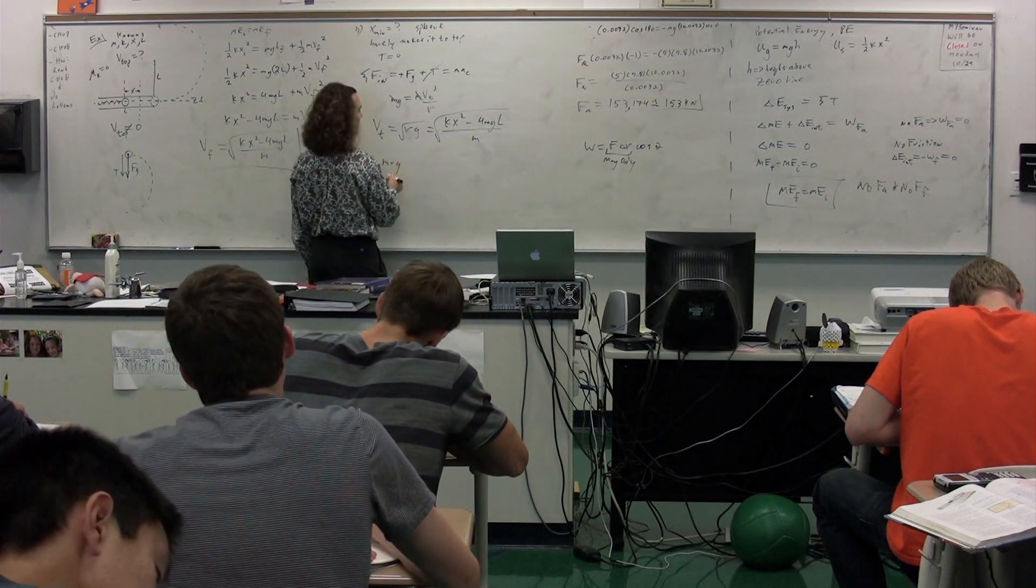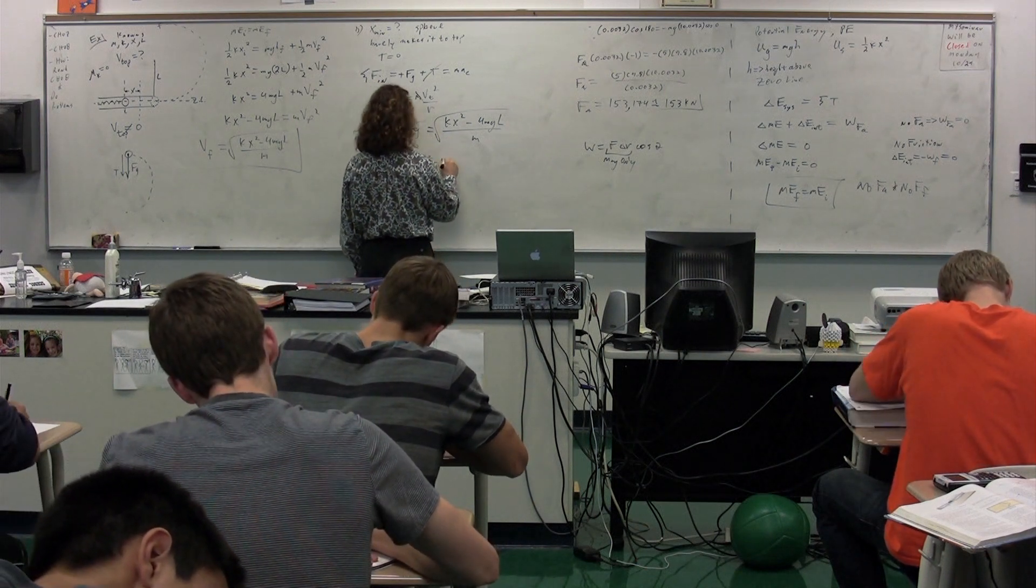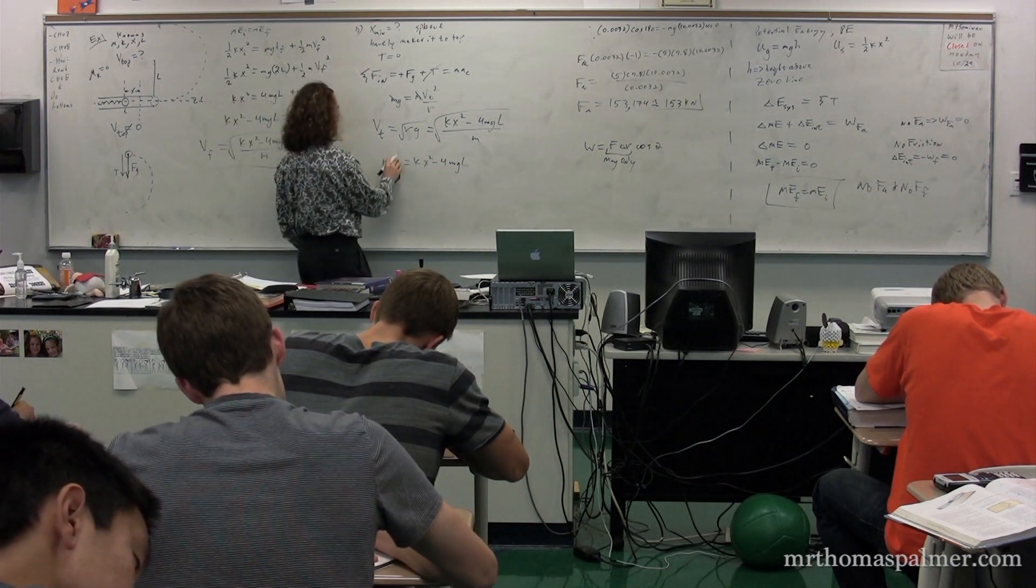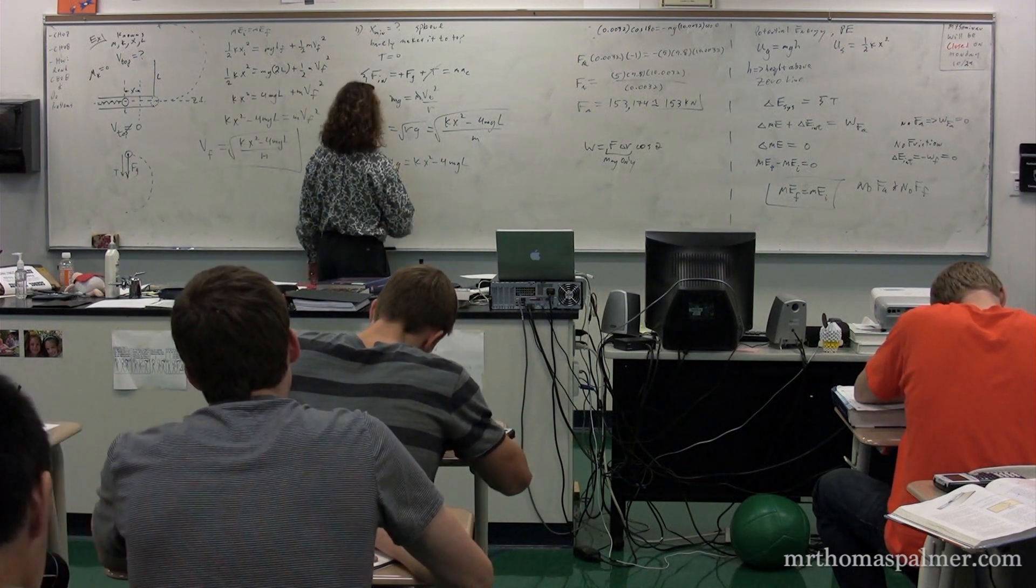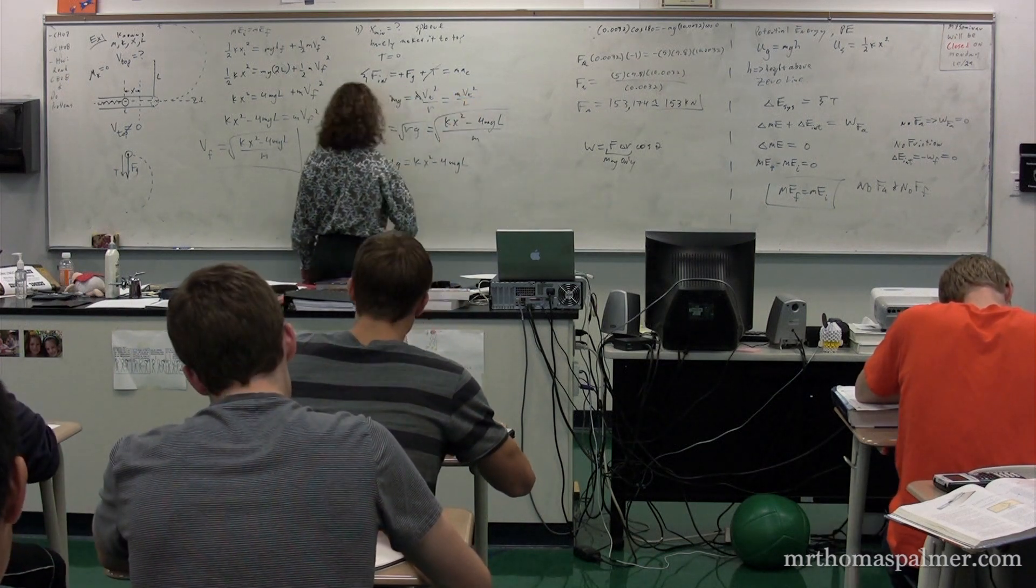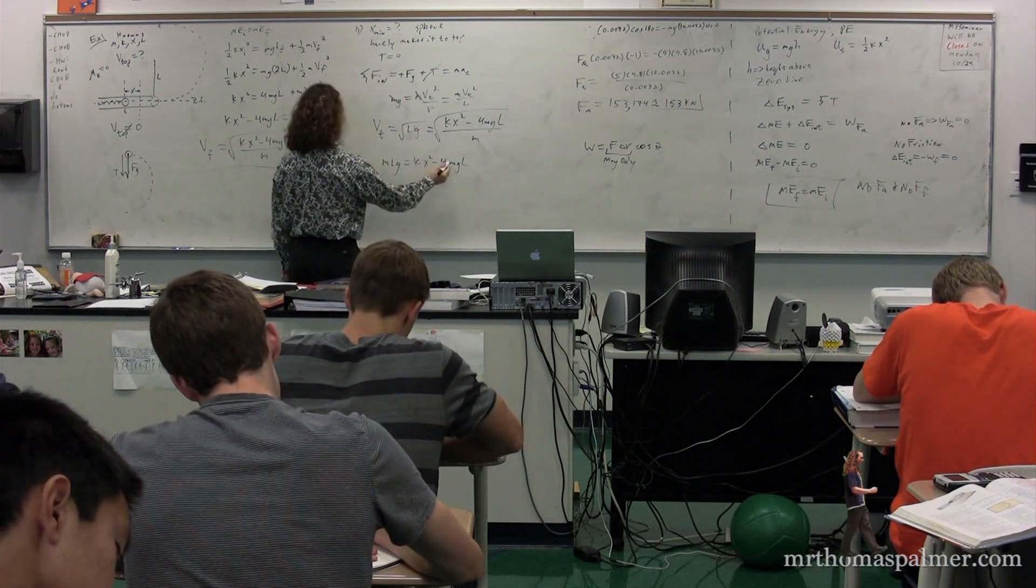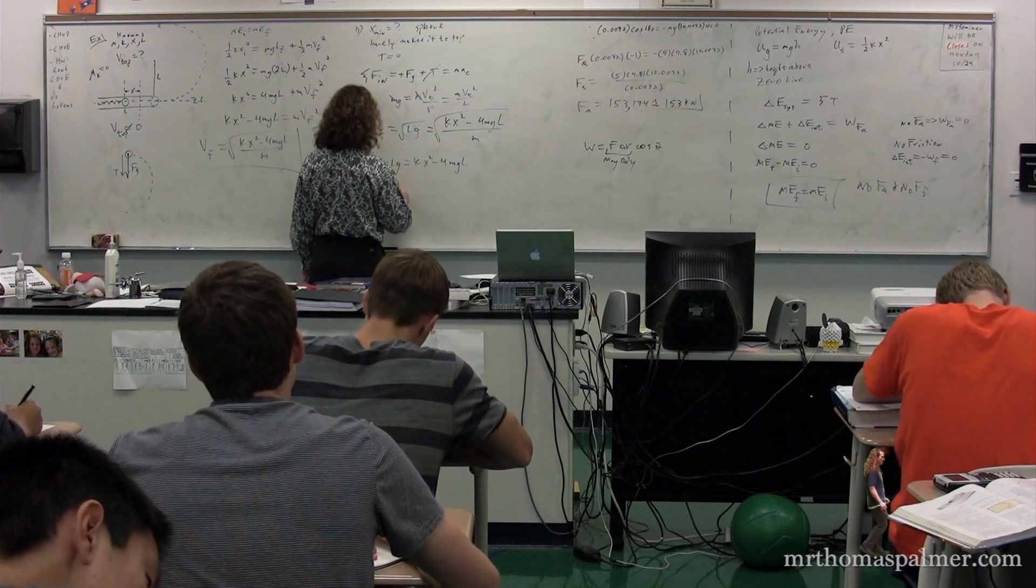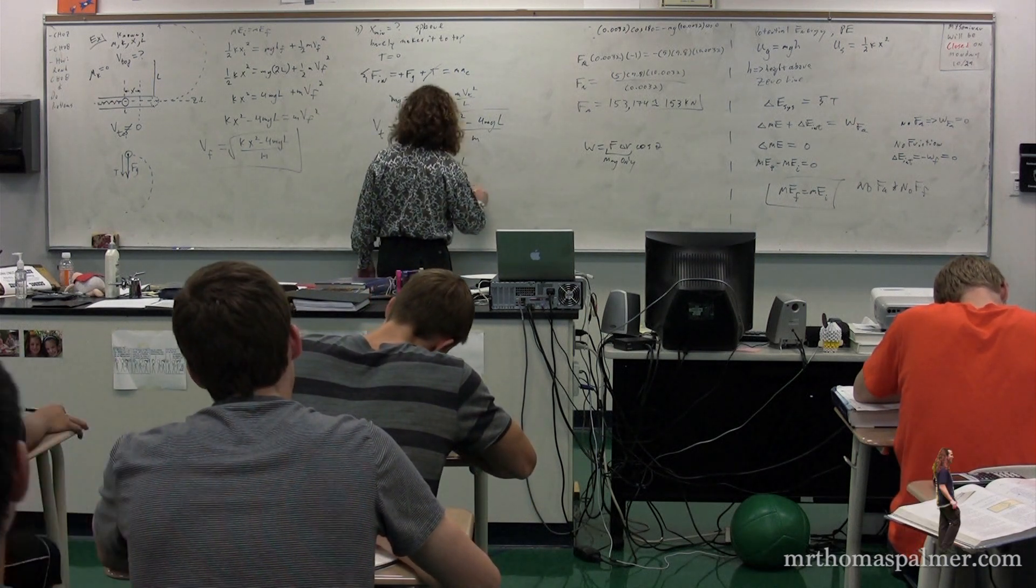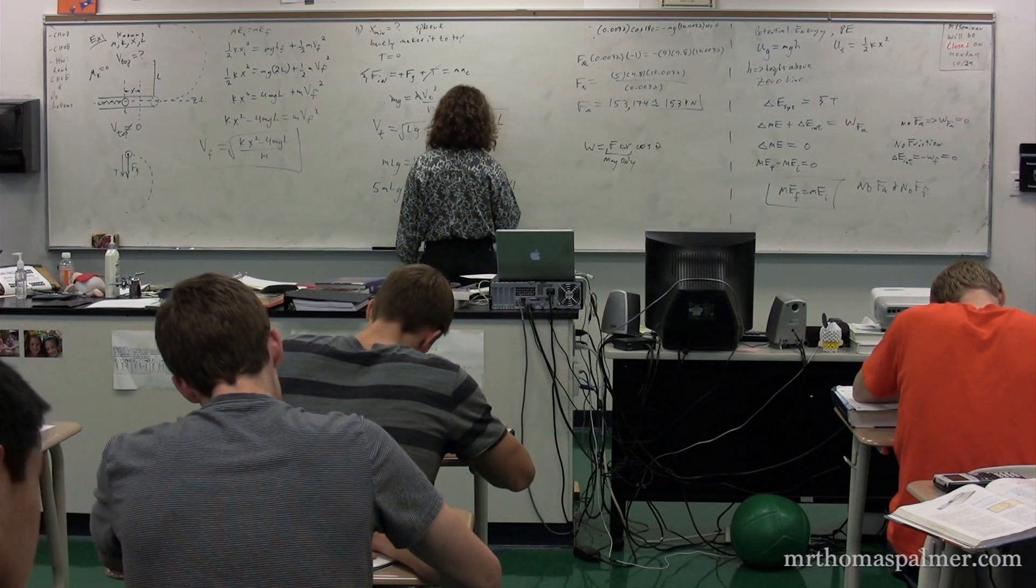I suppose we should point out that r is equal to l. So this is l. Here, let's do this. mvt squared over l. Therefore, this is l. Therefore, we get 5mlg equals kx squared. Therefore, x is equal to the square root of 5mlg over k.